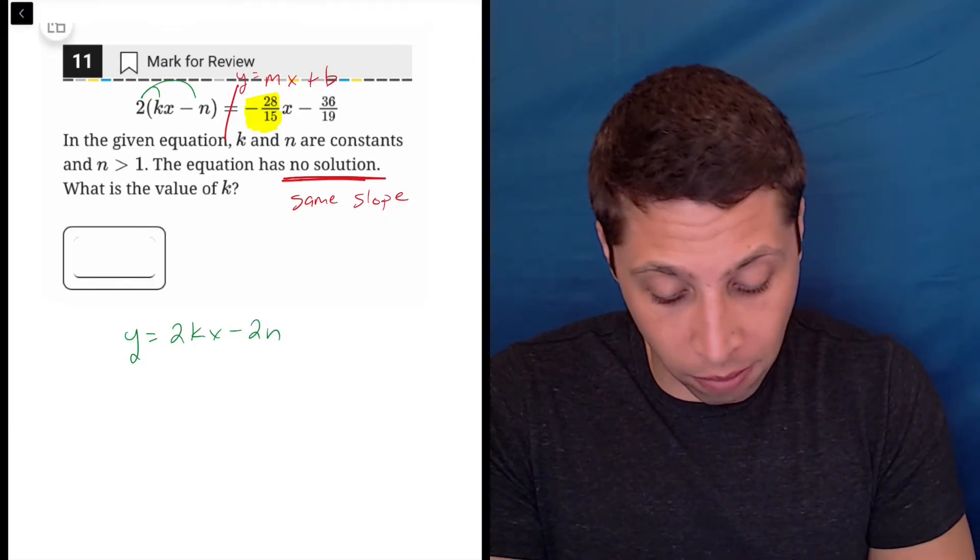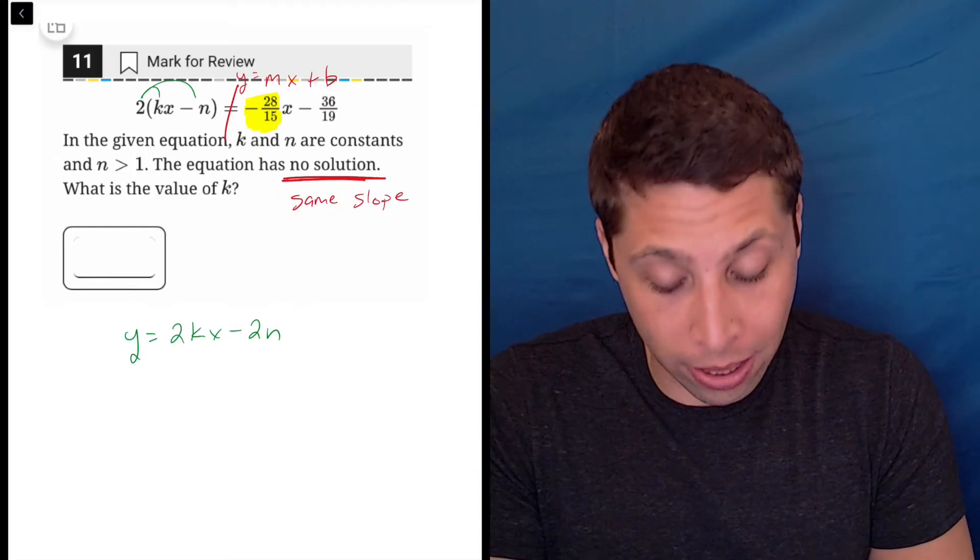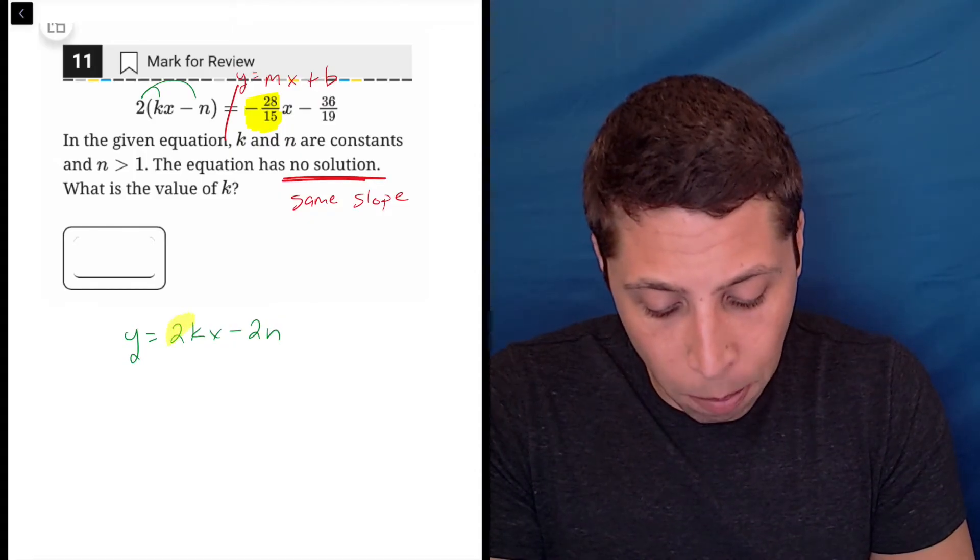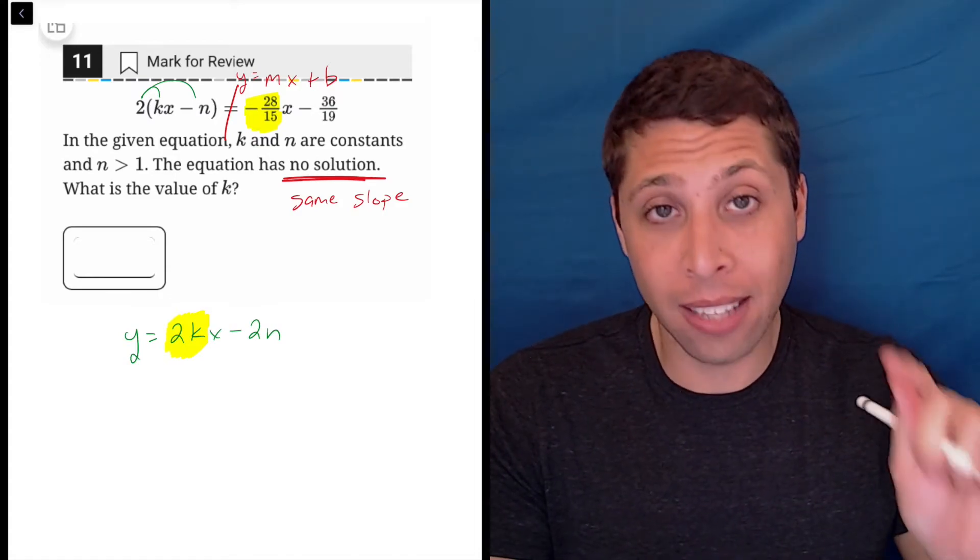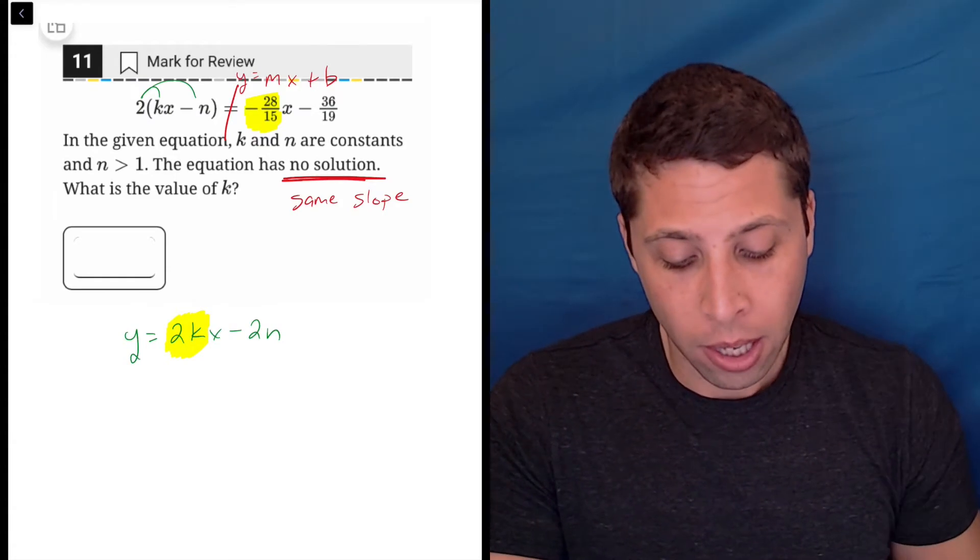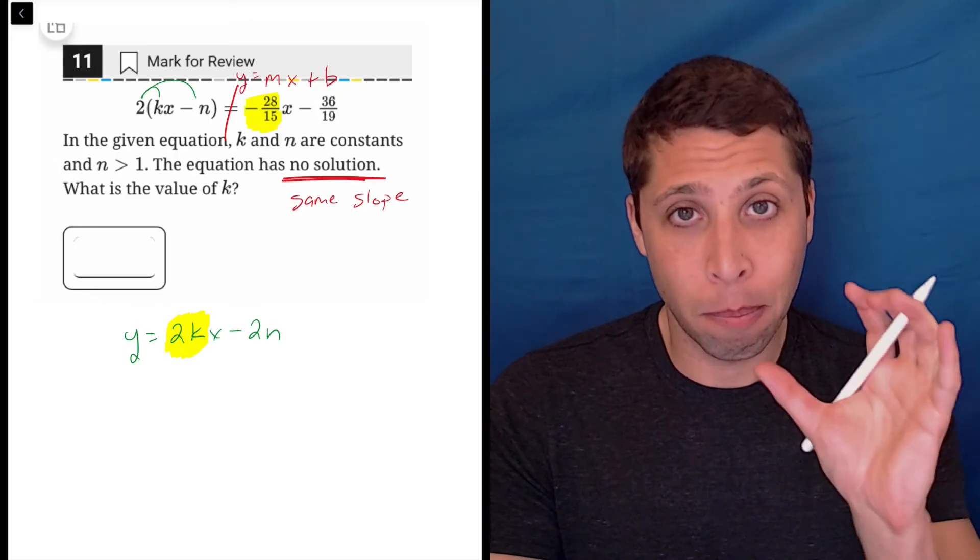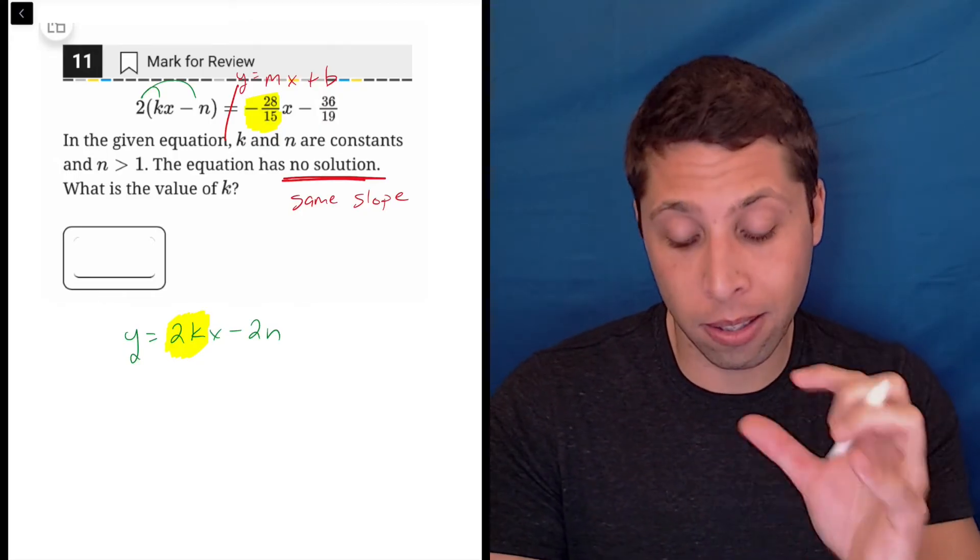So the slope is messier because I've got this k, but it's the same principle. The slope always of a line is the part that's attached to our variable. And the k is not a variable. It is a constant. It's a number, a specific number that we're going to solve for. So as a whole, it's part of the slope. This 2k is the slope.